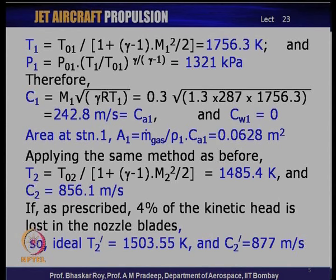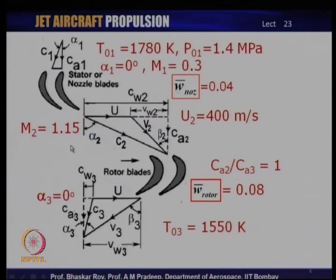Velocity C1 corresponds to M1 of 0.3 and depends on the local temperature just found. Invoking that local temperature, we get a velocity of 242.8 m/s. Since alpha_1 is 0, C1 effectively equals C_A1 and correspondingly C_W1 is zero. If you keep your eye on the velocity triangle, we are trying to solve all the parameters shown in it — the trick of solving such problems is that if you can find all parameters in the velocity triangle, you can calculate turbine performance completely and fully.